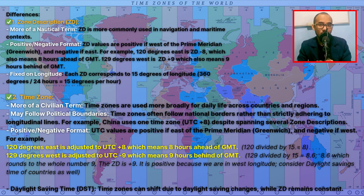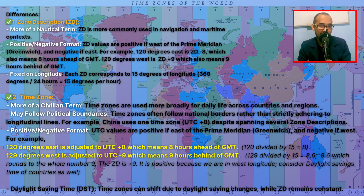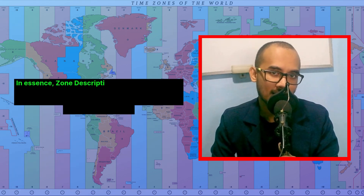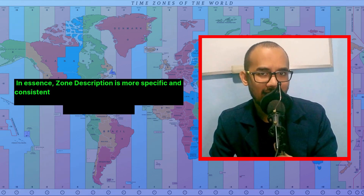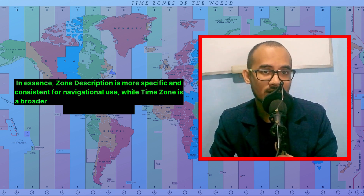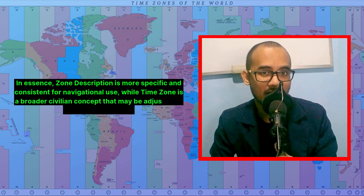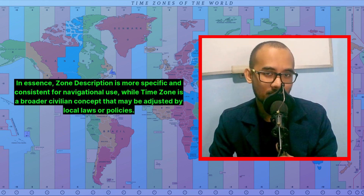For time zone format, UTC values are positive if east of Greenwich and negative if west. For example, 120 degrees east is UTC plus 8 (8 hours ahead of GMT), and 129 degrees west is UTC minus 9 (9 hours behind GMT). Time zones can also shift due to daylight saving changes, while ZD remains constant. In essence, zone description is more specific and consistent for navigational use, while time zone is a broader civilian concept that may be adjusted by local laws or policies.